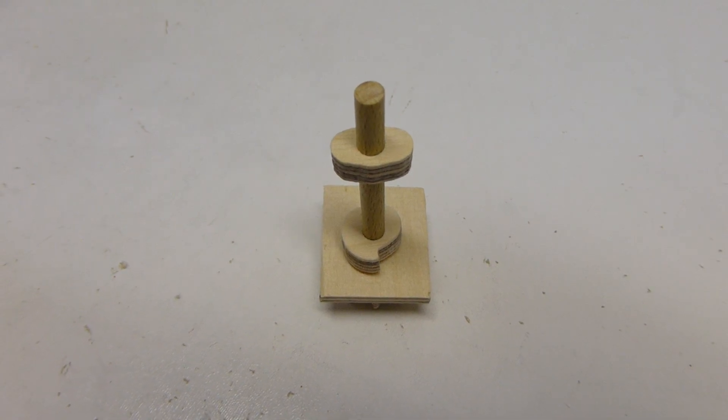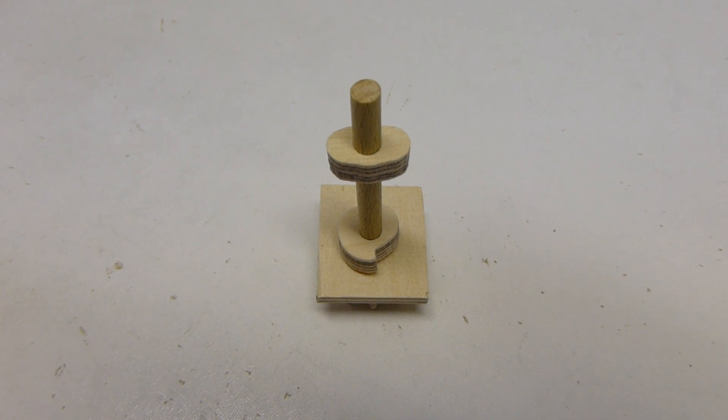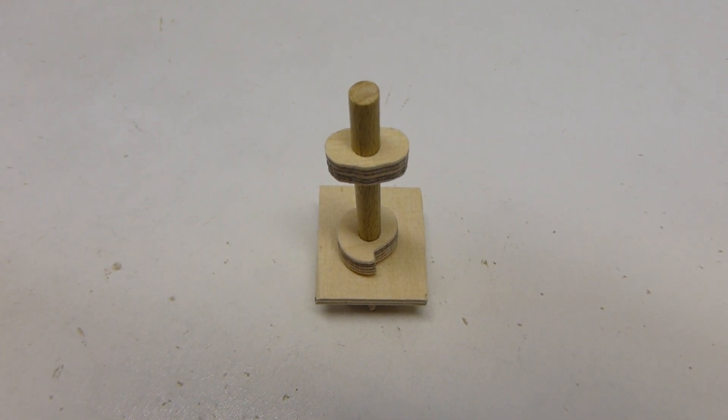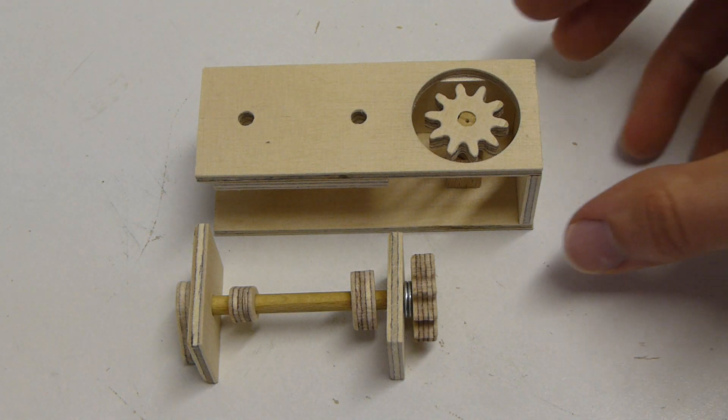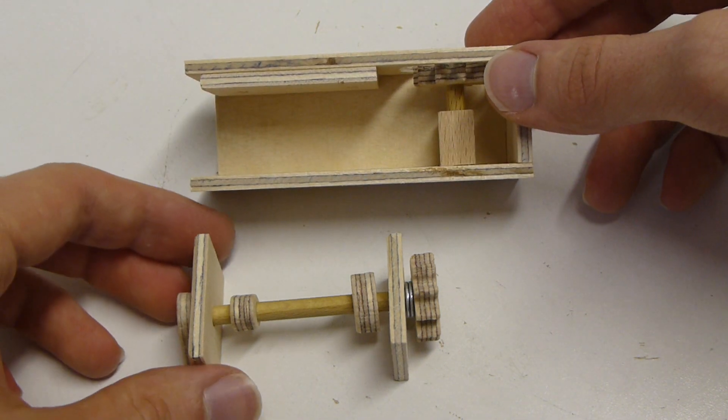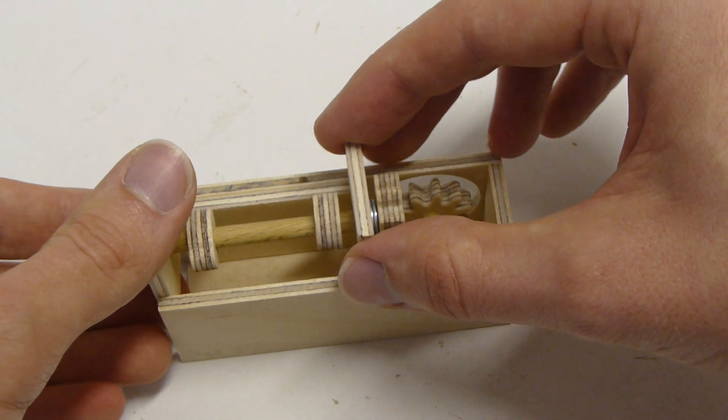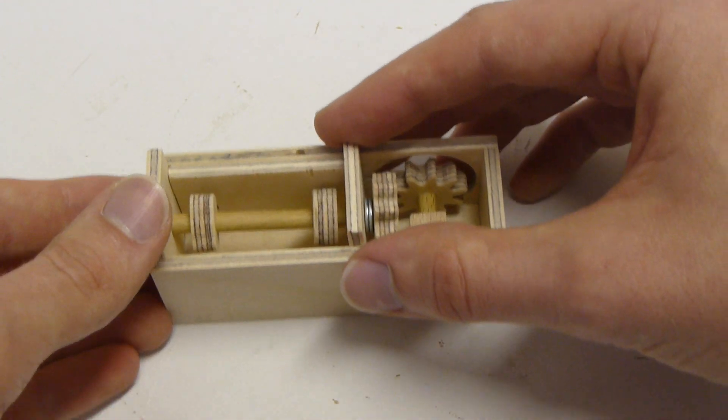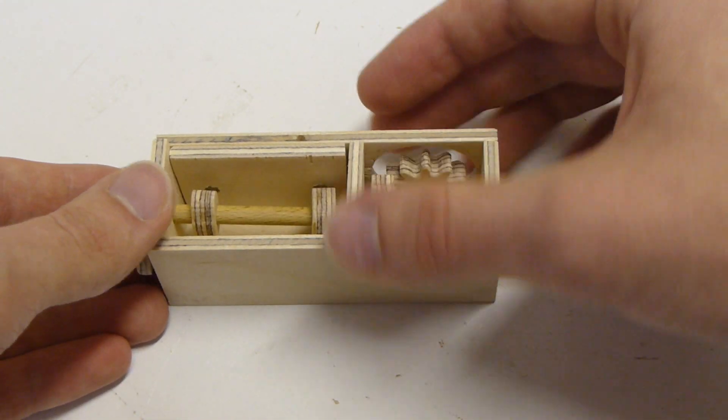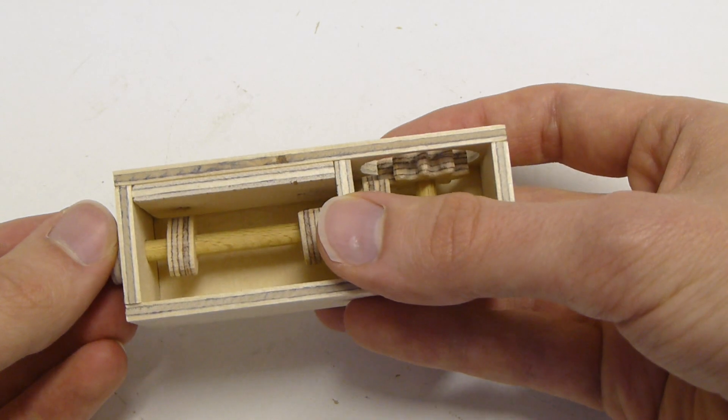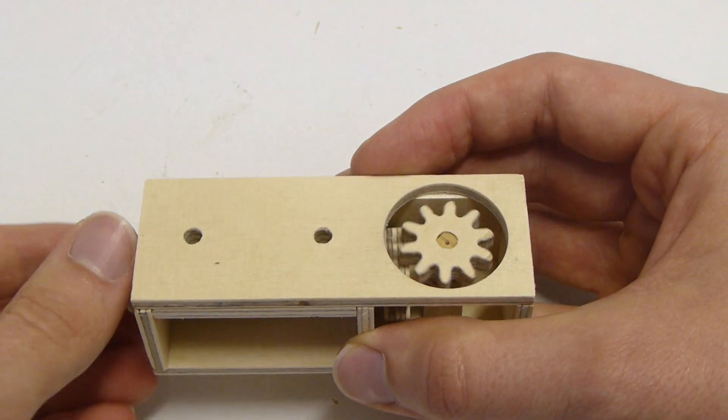Die Kurvenscheiben sollten wie hier zu sehen angeordnet werden. Vor dem endgültigen Einbau der Kurbelwelle zuerst ausprobieren, ob sich die Mechanik leicht drehen lässt. Eventuell nochmal etwas nachschleifen.